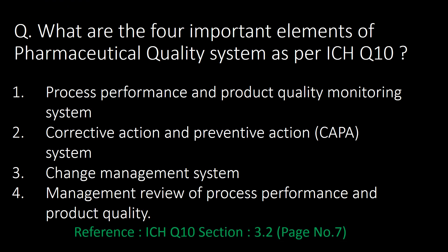What are the four important elements of the pharmaceutical quality system as per ICH Q10? The four important elements are: first, process performance and product quality monitoring system; second, CAPA, that is corrective and preventive action; third, change management system; and fourth, management review of process performance and product quality.